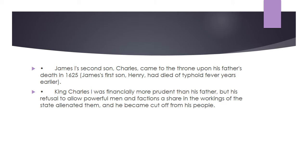James I's second son Charles came to the throne upon his father's death in 1625. James I's son Henry had died of typhoid fever years earlier. King Charles I was financially more prudent than his father, but his refusal to allow powerful men and factions a share in the workings of the state alienated them, and he became cut off from his people.